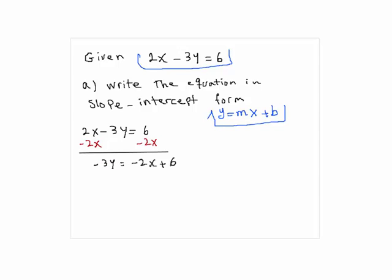So here we have y equals, divide each term by negative 3. So we have y equals 2/3 x minus 2. 6 over minus 3 would be equal to negative 2.